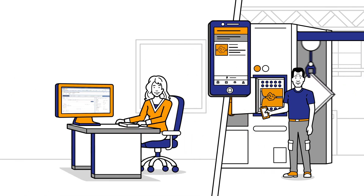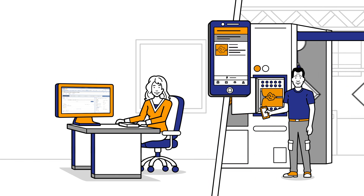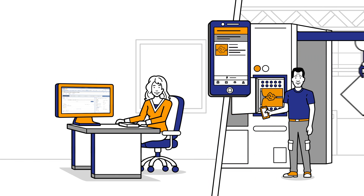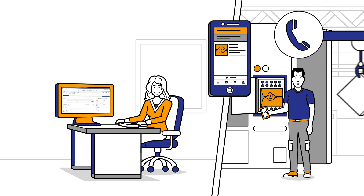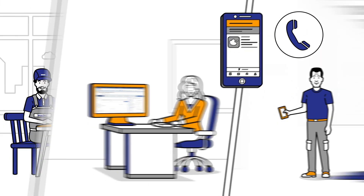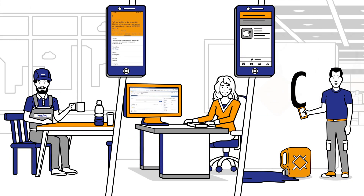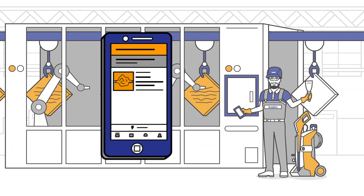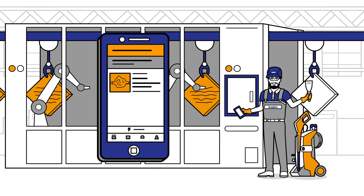Dispatcher Lisa immediately realizes that the machine requires special technical cleaning but first needs to be switched off. Lisa therefore arranges a cleaning appointment. She sends the work order and the time slot to technical cleaner Simon. Simon arrives at the machine with his special equipment at the time arranged.